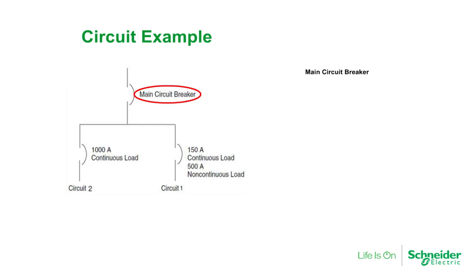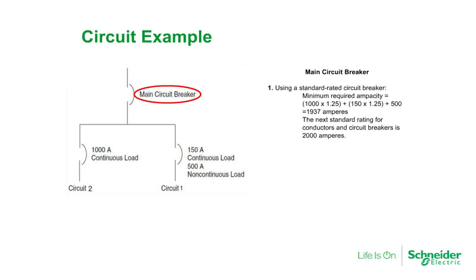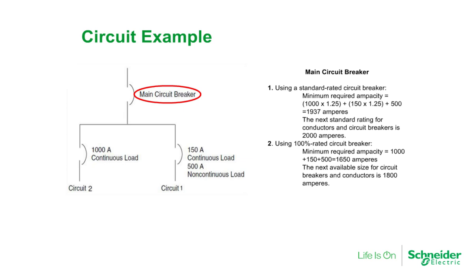Finally, let's take a look at the main circuit breaker calculation. When using a standard rated circuit breaker, the minimum required ampacity would be 1000A times 1.25 plus 150A times 1.25 for all the continuous load downstream from the main circuit breaker, plus 500A for the non-continuous load, which yields 1937A. The next standard rating for conductors and circuit breakers is 2000A. When using a 100% rated circuit breaker, the minimum required ampacity would be 1000 plus 150 plus 500, yielding 1650A. The next available size is 1800A, resulting in project cost reductions — specifically savings in the price of the busway, switchboard bussing, and cable.